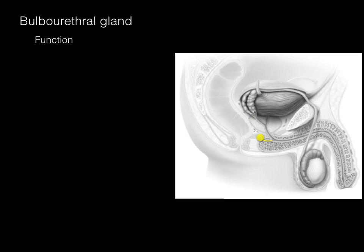The bulbourethral gland, shown in yellow, is found in the urogenital diaphragm of males, is paired, and is also known as Cowper's gland. It empties its contents into the penile urethra during an erection. It secretes a lubrication that coats the inside lining of the urethra to reduce friction and increase velocity during ejaculation — think of sliding down a dry slide versus a wet one. It also helps neutralize the acidity of any remaining droplets of urine in the urethra.